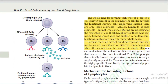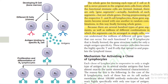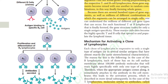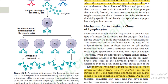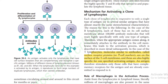The whole gene for forming each type of T or B cell is never present in the original stem cell. Instead, only gene segments are present. During pre-processing of T and B lymphocytes, these gene segments become randomly mixed and combined with one another. Because there are several hundred types of gene segments and millions of different combinations, one can understand the millions of different cell gene types that can occur.